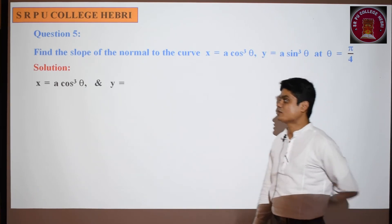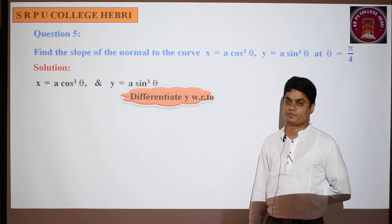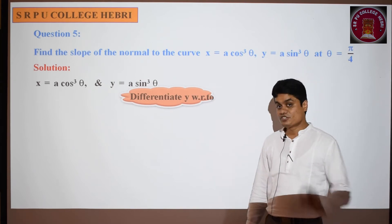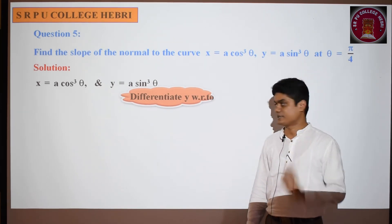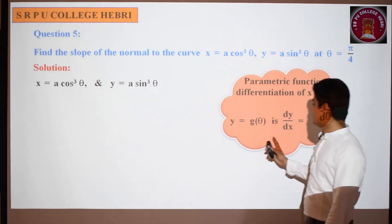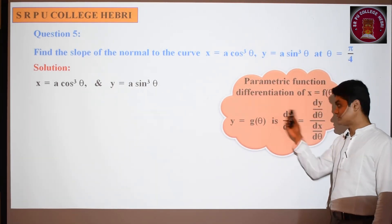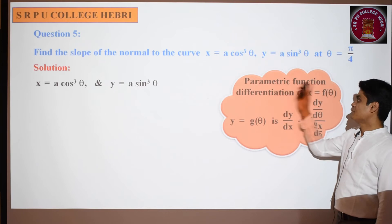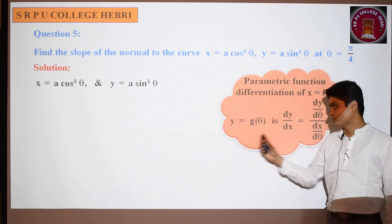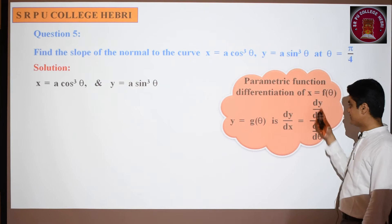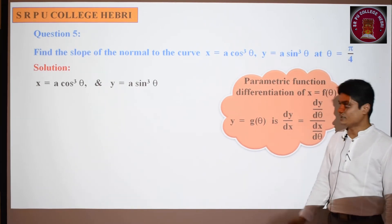Consider x = a·cos³θ, y = a·sin³θ and differentiate. This requires parametric function differentiation. For parametric functions x = f(θ), y = g(θ), dy/dx = (dy/dθ) / (dx/dθ). I hope you remember that from the previous chapter.